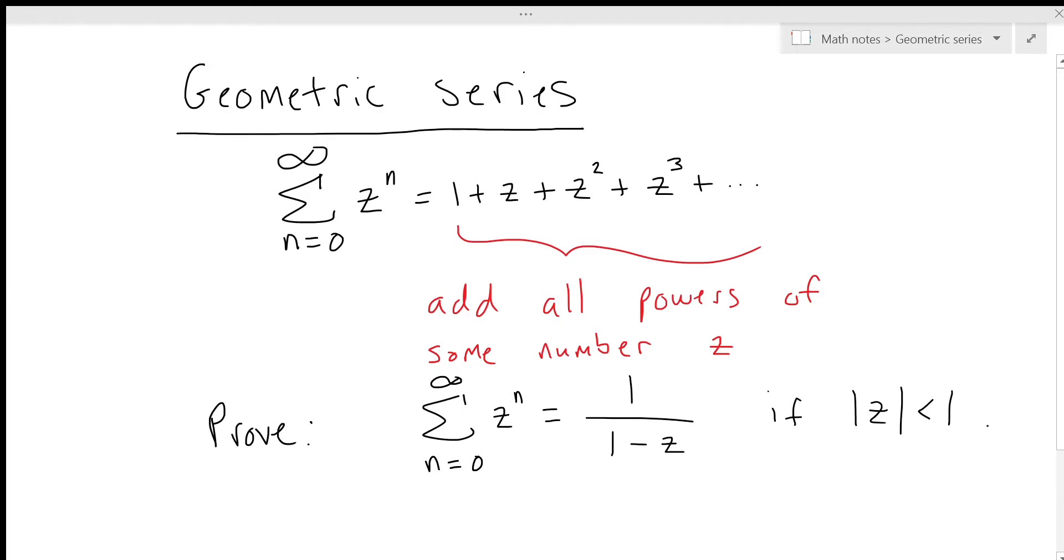So if the absolute value of z is less than 1, then this infinite series converges and it converges to this value 1 divided by 1 minus z. So that's our goal for today.